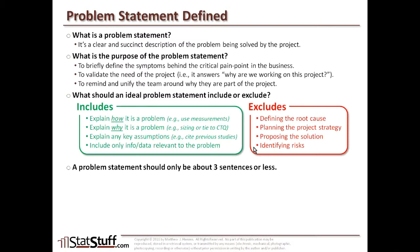When writing a problem statement, I strongly recommend keeping it very brief — only three sentences or less. Ideally, one sentence is best, as long as you're following all these inclusions and exclusions. If you feel there's a lot more context needed, I like to create what I call a background statement — something separate that layers the context to define key terms, expectations, or processes within the business in order to lay down the proper context for the problem statement.